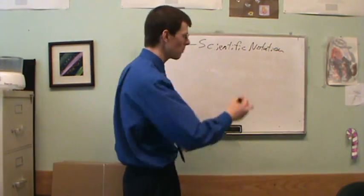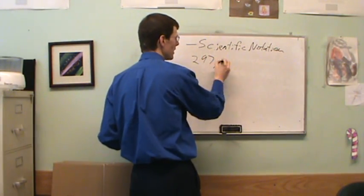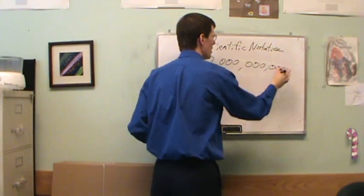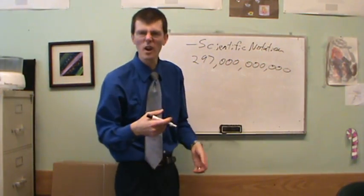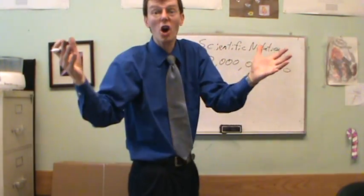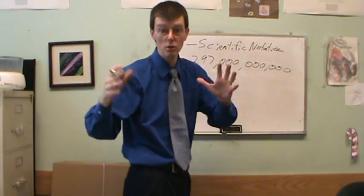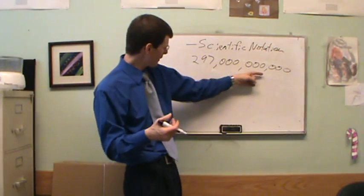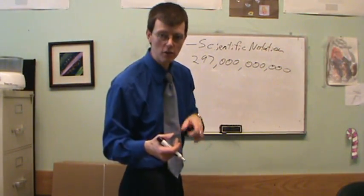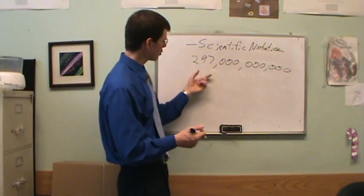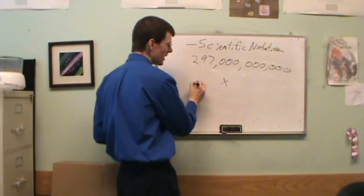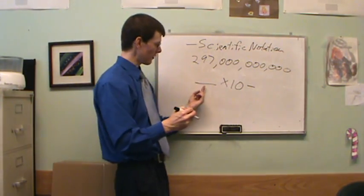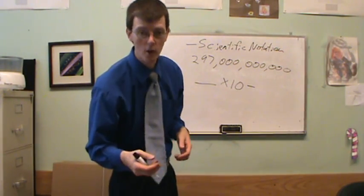So if I want to write a really big number, 297,000,000,000 - that's a huge number there. We're going to deal with big things. The number of stars in the galaxy, the number of galaxies in the universe, that kind of stuff. So how do I deal with big numbers without having to waste my time writing all these zeros? I write this in scientific notation. In scientific notation, we write it as one number times 10 to the power of something.